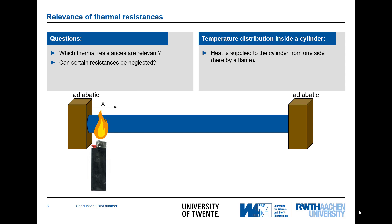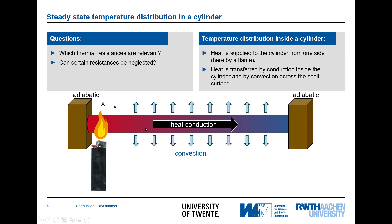Let us look at one example. The question is which thermal resistances are relevant. We have a rod between two adiabatic walls, which means that there is no heat transfer from the rod into the wall on both sides. A lighter provides heating so we can heat up one side of the rod. We look at a steady-state condition, meaning all the heat introduced on one side is conducted to the other side, and along the way it is released to the ambience by convection.